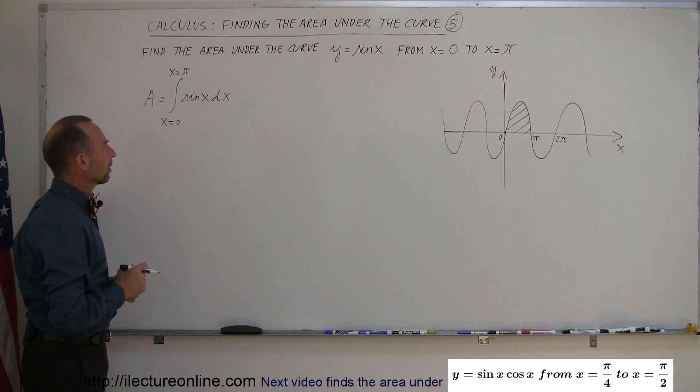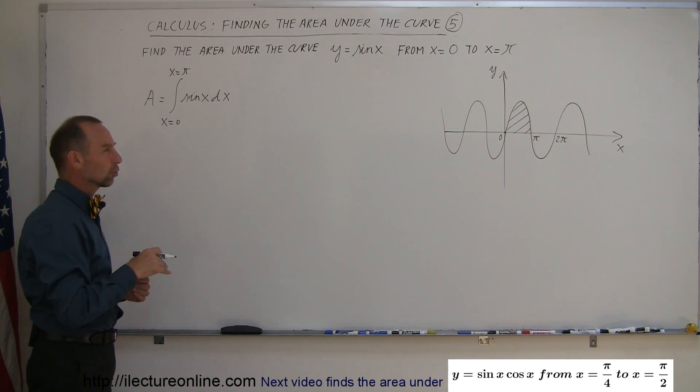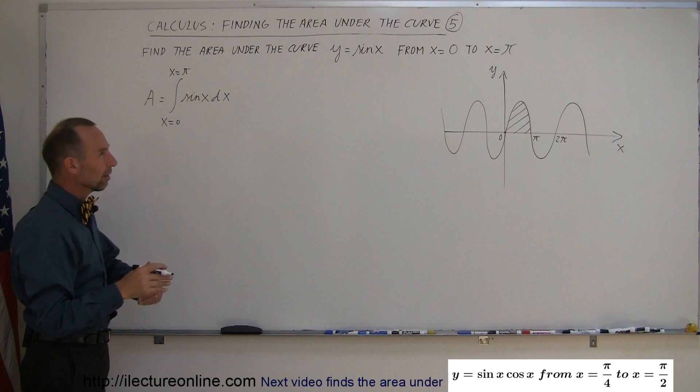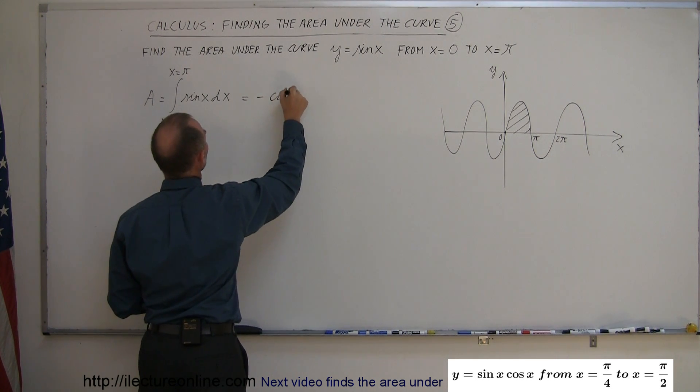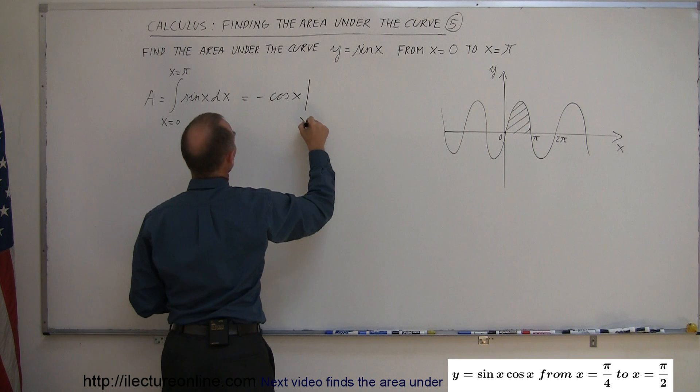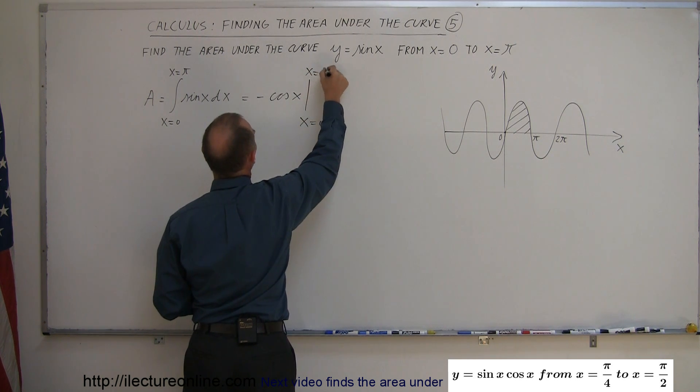So what is the integral of the sine of x? Well, the integral of the sine is the negative cosine, because the derivative of the sine is the positive cosine, so that works. So this is equal to minus the cosine of x evaluated from x equals 0 to x equals pi.